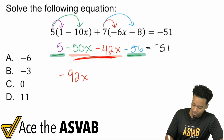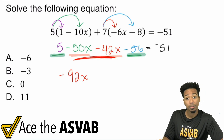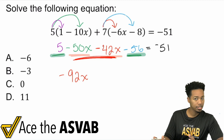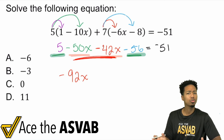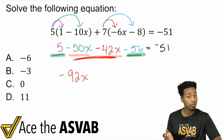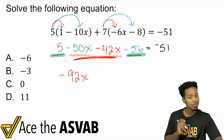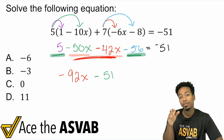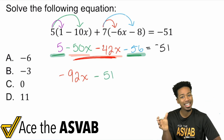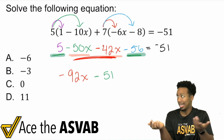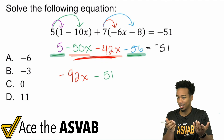Over here with the 5 and the negative 56: you have a positive 5 but a negative 56. When you have different signs being combined, just subtract the numbers and keep the sign of the bigger number. So 56 minus 5 is 51, and you keep it negative 51 because that negative 56 is clearly bigger.